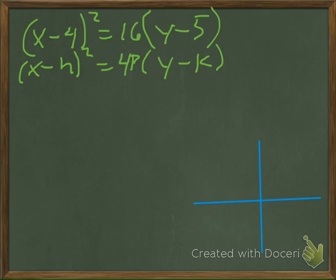Since this is an x being squared, it's going to be opening up or down, and since the coefficient on that x, or because that 16 is positive, it's going to be opening up. So our vertex is at h, k, so our vertex is at 4, 5.